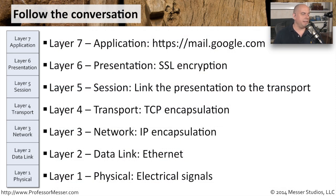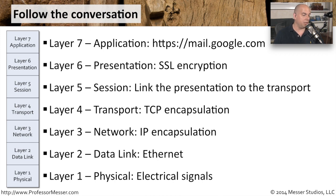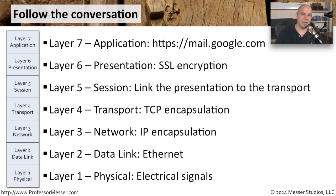That's exactly what happened here: I had an application — Google Mail — which was encrypted via SSL or TLS. It was sent down and transported via TCP across my network, using IP addresses to communicate across long distances. Just to get that data to my local router, I used MAC addresses at the data link layer to get it the next hop along the way. And at last, that router was putting it onto the wire as electrical signals, which went across the internet and hopped through a number of routers, probably going up to layer 3 and 4 along the way.